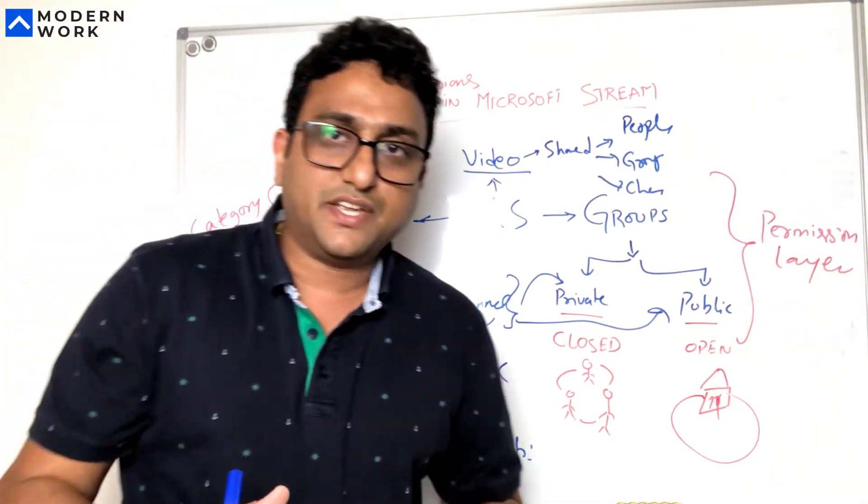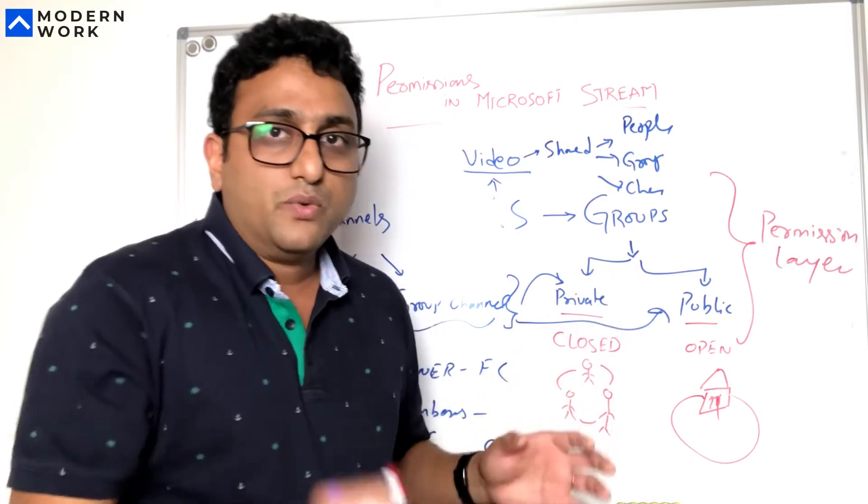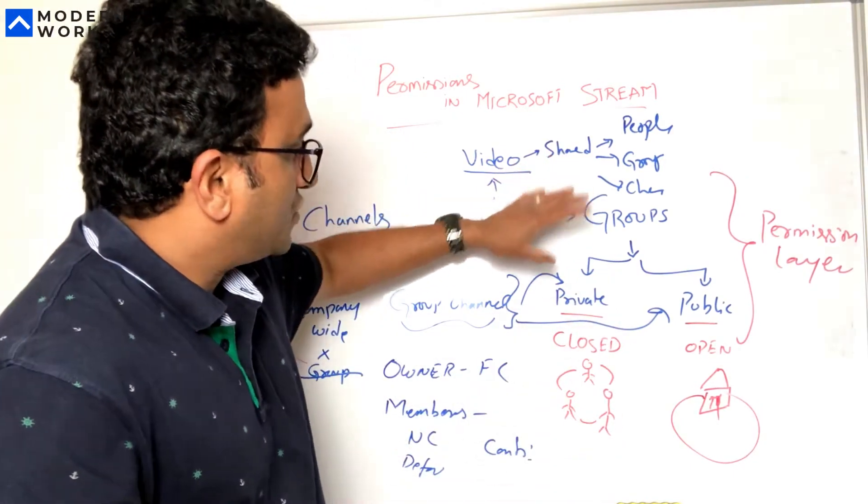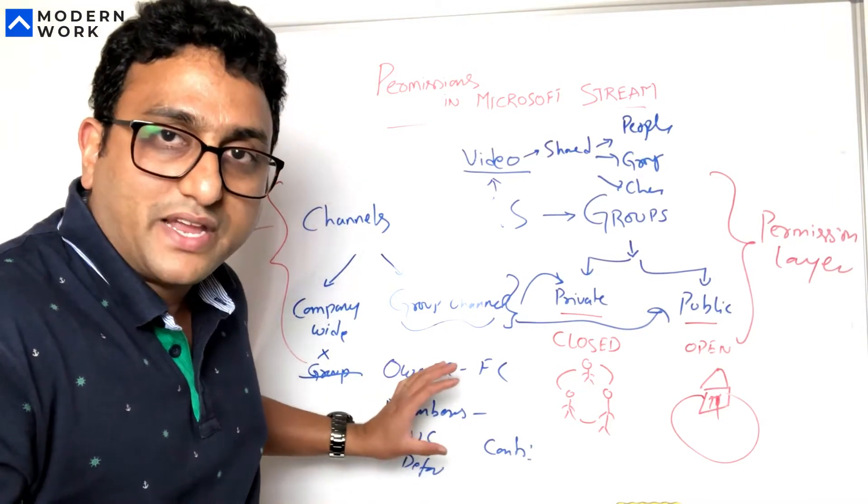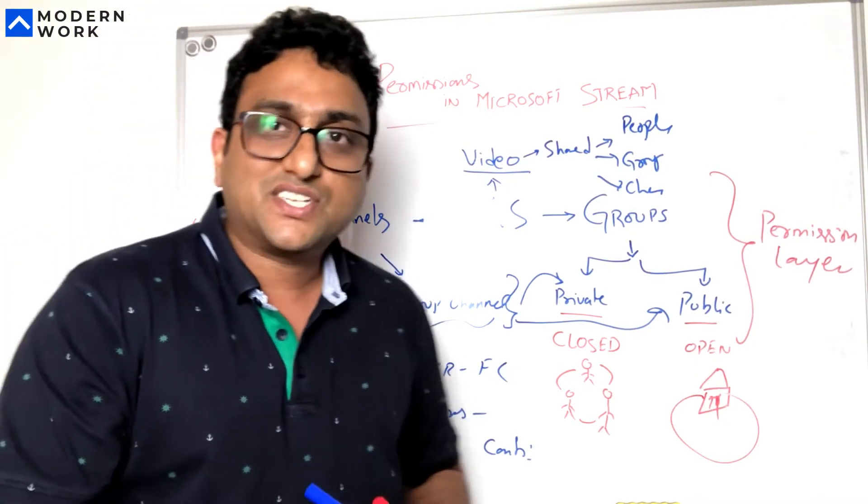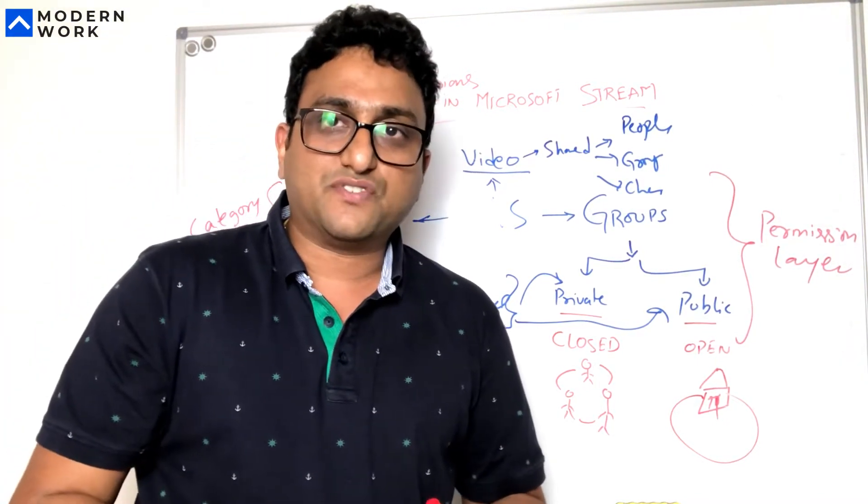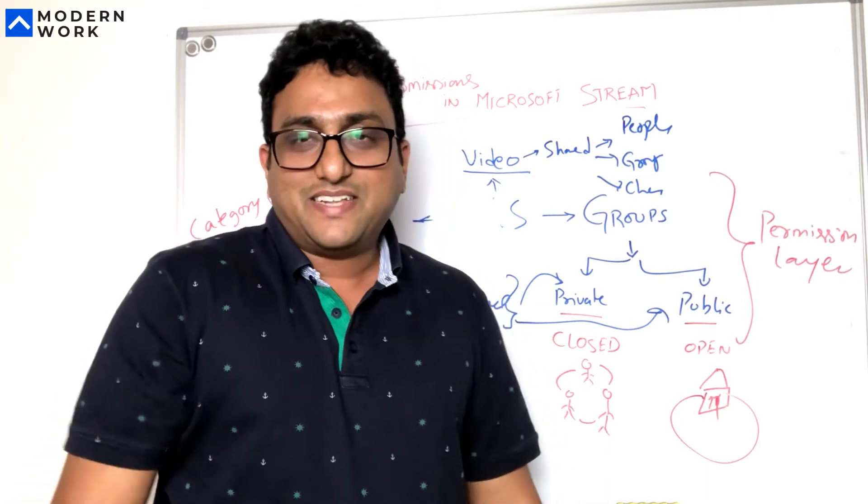That's a quick overview of how permissions are structured in Microsoft Stream. Tomorrow we'll look at using the combination of groups, channels, and the permissions itself, the different types of structures you can actually have in Microsoft Stream.